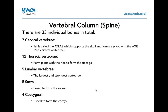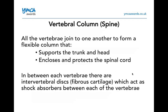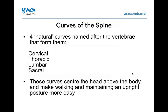The sacral bones are also fused together to form the sacrum. All the vertebrae join to one another to form a flexible column, which supports the trunk and head and encloses and protects the spinal cord. In between each vertebra there are intervertebral discs of fibrous cartilage, which act as shock absorbers. There are four natural curves forming through the cervical, thoracic, lumbar, and sacral regions. These curves keep your body in a neutral spine alignment and help you maintain posture more easily.